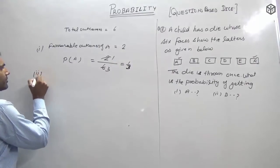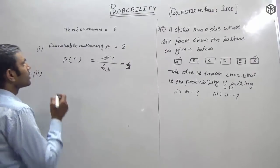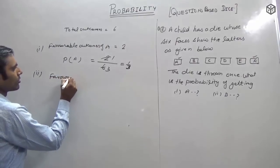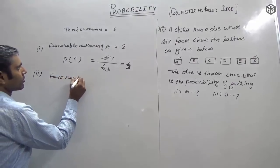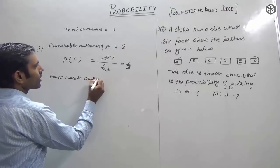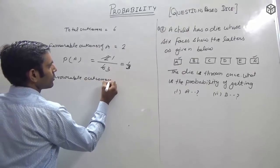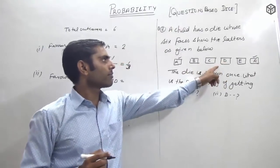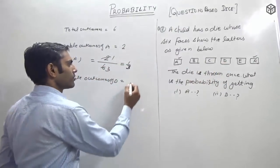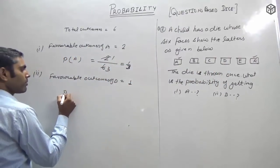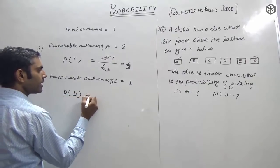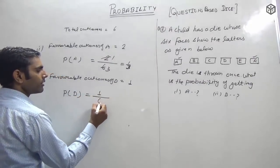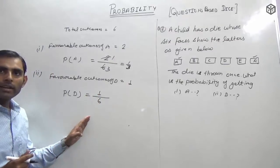For the second part, what is the probability of getting D? D appears one time on the die. So P(D) = favorable outcome of D / total = 1/6.